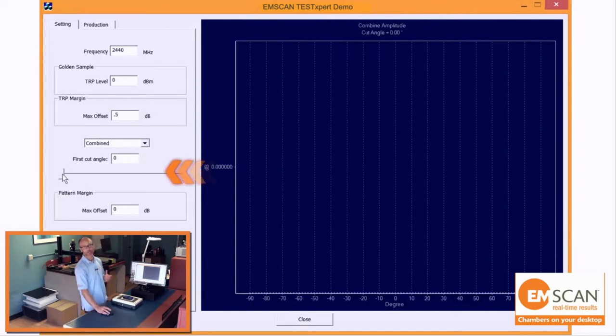We'll also be looking at the radiated pattern. We're going to take a specific cut of our radiation pattern and compare that to the golden sample. This is an extra level of certainty over just radiated power.